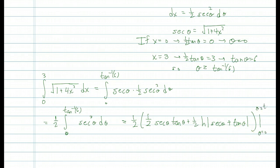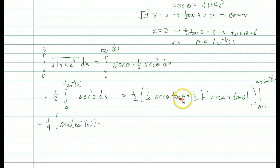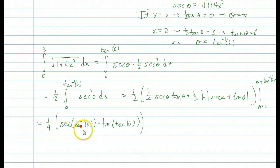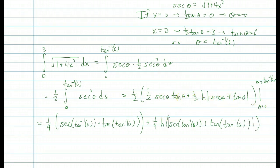Next we plug in the top limit and bottom limit and subtract. This will be a little messy, but we'll eventually get it to a reasonable-looking number. Wherever we see theta, we first put in inverse tangent of 6, giving us secant of inverse tangent of 6 times tangent of inverse tangent of 6, plus one-quarter times the natural log of secant of inverse tangent of 6 plus tangent of inverse tangent of 6.